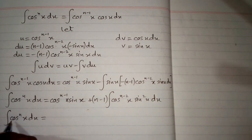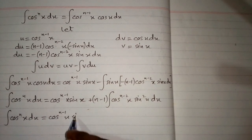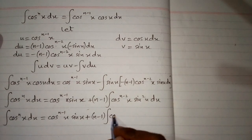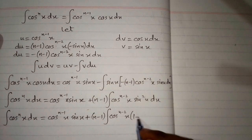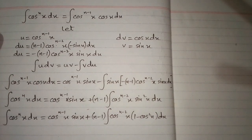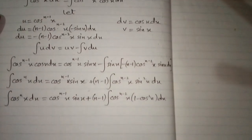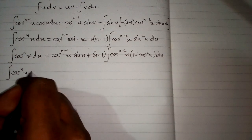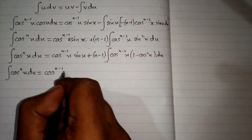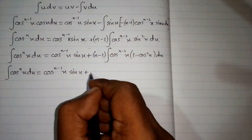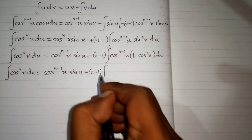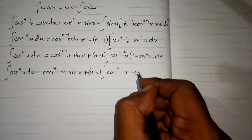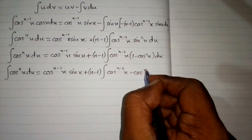The integral of cosine raised to the power n is equal to cosine raised to the power n minus 1 times sine x, plus n minus 1 times the integral. Now we use the identity sine squared x equals 1 minus cos squared x. Opening the bracket, we get cosine raised to the power n minus 2 minus cosine raised to the power n.